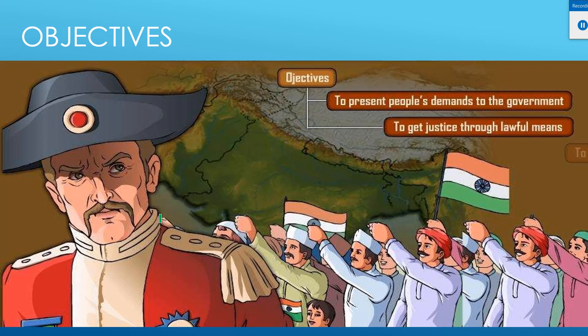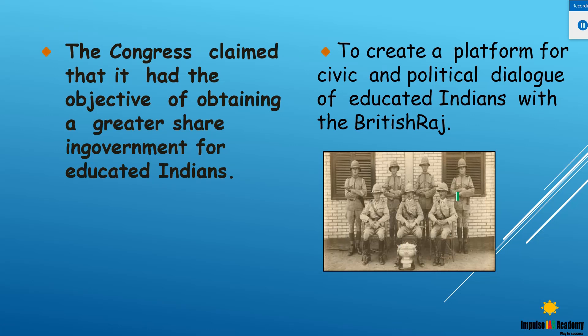What were the objectives of this Congress? The basic objective was that it wanted to represent people's demands to the government. The second important objective was to get justice through lawful means — that people would get justice according to proper rules and laws. Another objective was that Indian leaders wanted to obtain a greater share for educated Indians in the government.